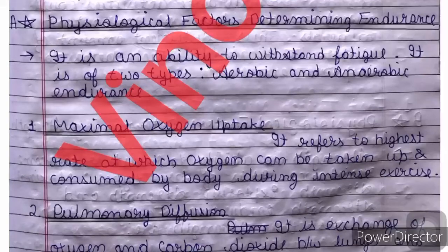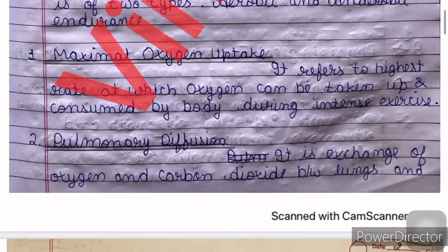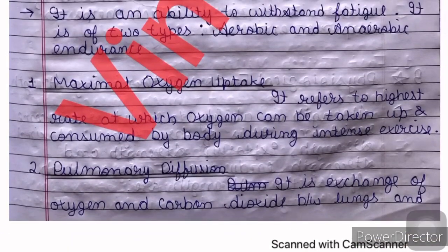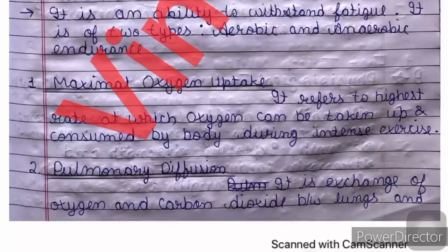Endurance is generally aerobic and anaerobic. The physiological factors determining endurance — the first point is Maximal Oxygen Uptake. Maximal oxygen uptake refers to the highest rate at which oxygen can be taken up and consumed by the body during intense exercise. At a high level, we improve and increase our endurance. Our body can exercise more. This enhanced oxygen utilization will improve mitochondrial respiration and endurance. Our body needs more oxygen.